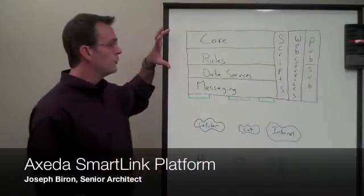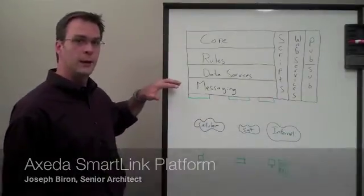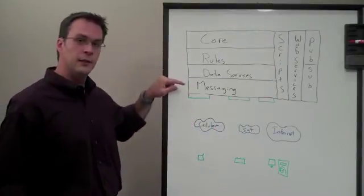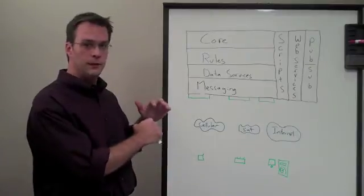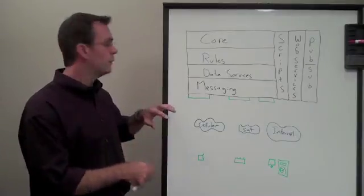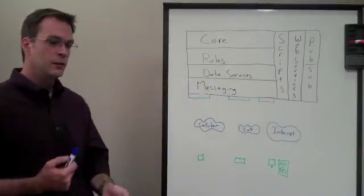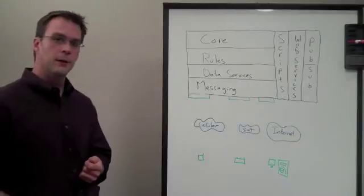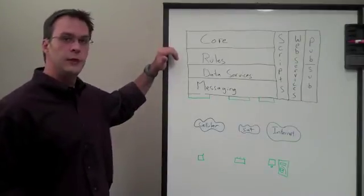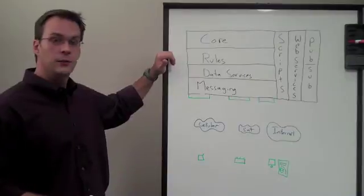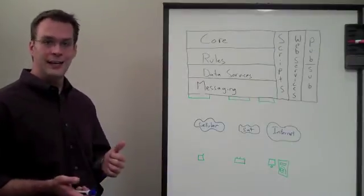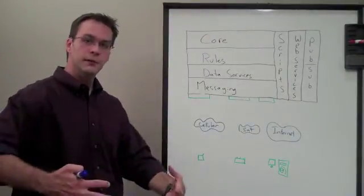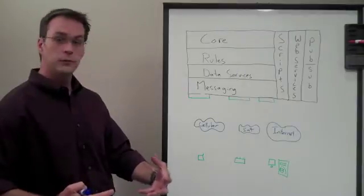The XSEDA platform is composed of a set of layered services that allow extensibility around the edges. Those layers include a messaging layer, which allows us to plug in device connectors for various types of equipment. Data services for reading data about a device or updating an alert condition. Business rules, which allow non-technical users to orchestrate business processes around those transactions. And the core, which pulls everything together and makes a cohesive platform out of all these services.